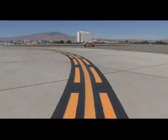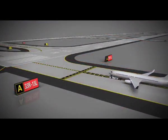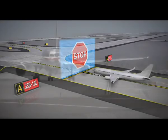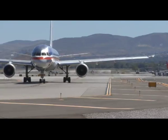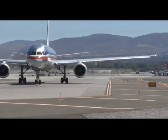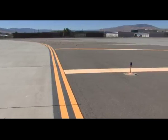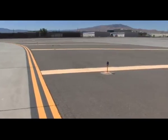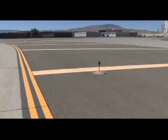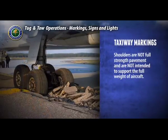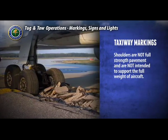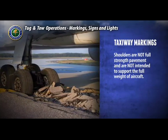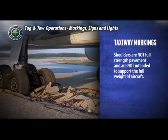An enhanced taxiway center line warns you of an upcoming hold position. Air traffic control clearance is required to cross the hold position. Taxiway edge markings have a single or double yellow stripe, and aircraft should not cross outside these markings. Taxiways can also have shoulder markings. These paved areas are used to prevent jet blast and water erosion from damaging the pavement. Shoulders are not full-strength pavement and are not intended to support the full weight of an aircraft, so it is critical that you do not let the aircraft cross the edge markings into the shoulder area.